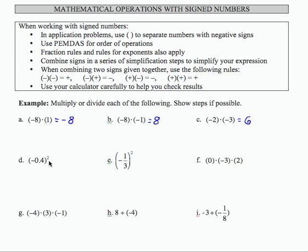In part D, we're going to have to be careful because I have negative 0.4 squared, which means I have negative 0.4 times negative 0.4. The result then is going to be a positive, and 0.4 times 0.4 is 0.16.